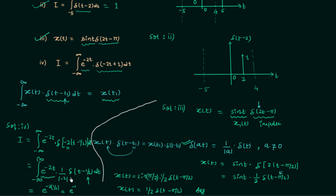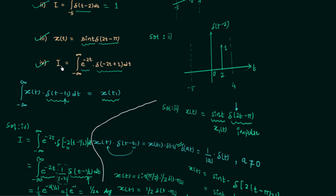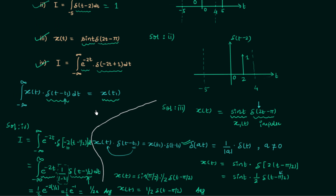However, we must not forget to include the (1/|-2|) = 1/2 factor with x(t). So the correct answer is (1/2)·e^(-2·(1/2)) = (1/2)·e^(-1), which we can write as 1/(2e). Whenever using any property, carefully compare the general form with the question to avoid missing constant factors. That is all for this lecture.